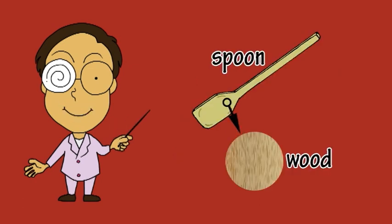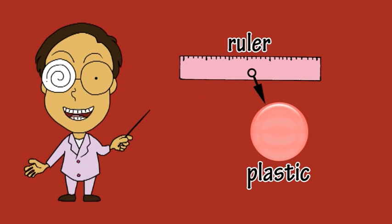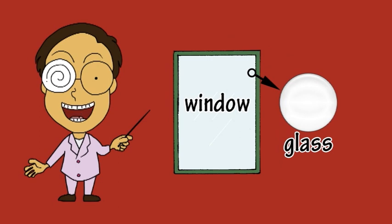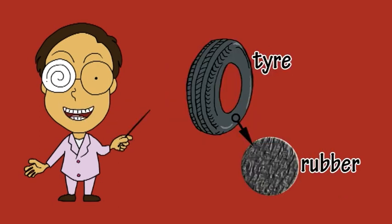The wood this spoon is made of is rigid, but the plastic this ruler is made of is bendy. The glass this window is made of is transparent, but the rubber this tire is made of is opaque.